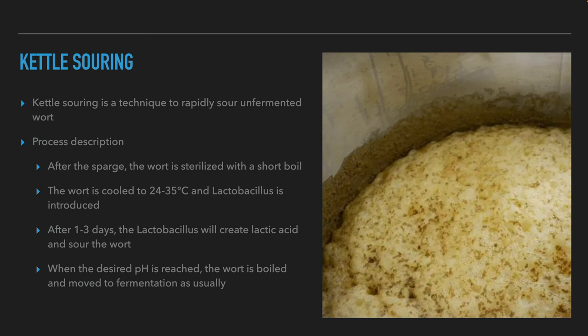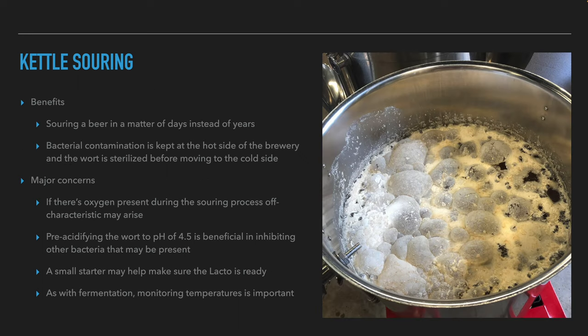Kettle souring is a quick method of souring unfermented wort. After the sparge, the brewer sterilizes the wort with a short boil, then cools the wort to 24 to 35 degrees Celsius. The brewer then adds lactobacillus and maintains a temperature of about 40 degrees Celsius, which encourages the growth of lactobacillus for one to three days. When the wort reaches the desired pH, the brewer boils it again to sanitize it from the lactobacillus and transfers it to normal fermentation. The benefit is that it allows brewers to produce sour beers in days instead of years, and bacterial contamination is kept on the hot side of the brewery.